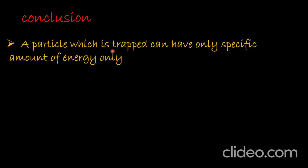Now we come to the conclusions of this problem. There are two important conclusions. Number one: the particle which is trapped can have only specific amounts of energy. The particle can move only in specific energy levels — E1, E2, E3, and so on. These are called allowed energy levels, and the particle is restricted to move only within these allowed energy levels.